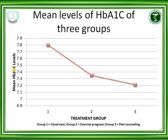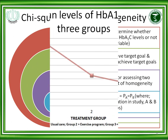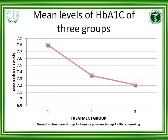For mean HbA1c level, we now have three treatment groups: Group 1 is usual care with mean HbA1c 7.8, Group 2 is the exercise group with mean HbA1c 7.35, and Group 3 is diet counselling with mean HbA1c 7.2. These three groups show different means, and when we compare them, we apply the F-test.